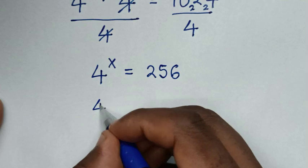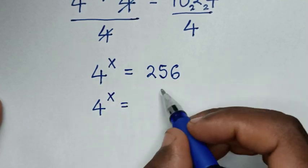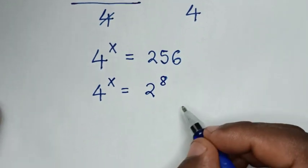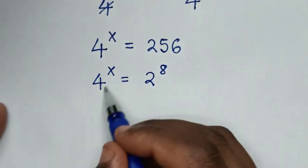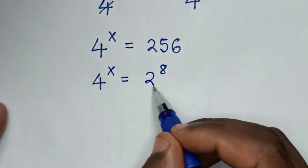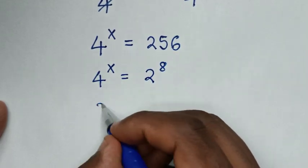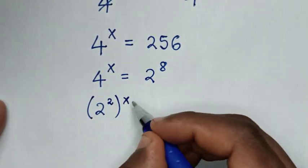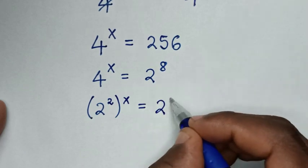Then it will be 4^x equals 256. From here, 256 is the same as 2^8. Then from here, 4 can be written as base 2, so 4 is the same as 2^2. Then in bracket, this power of x equals 2^8.